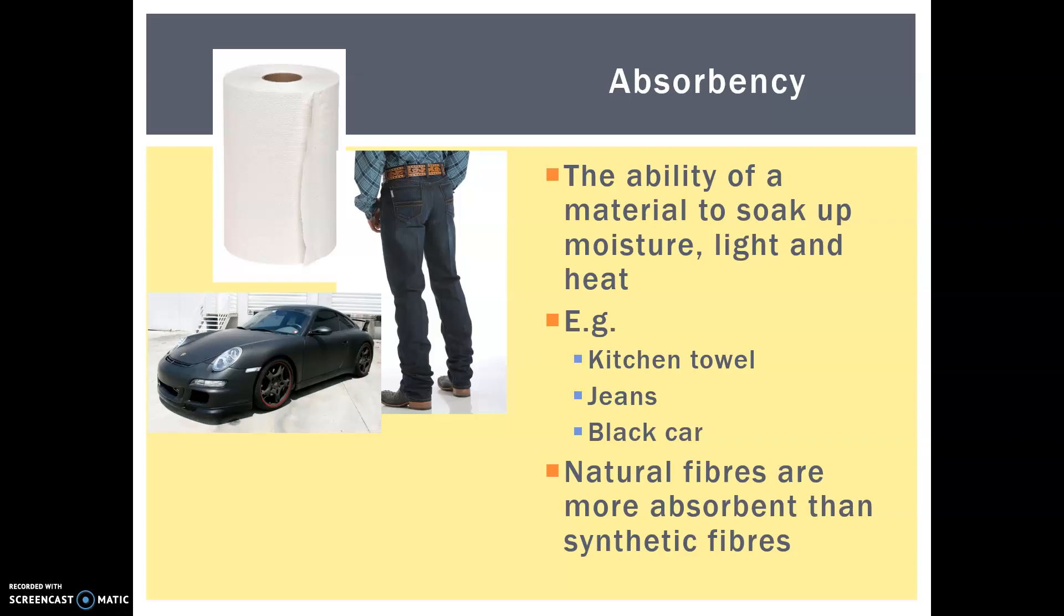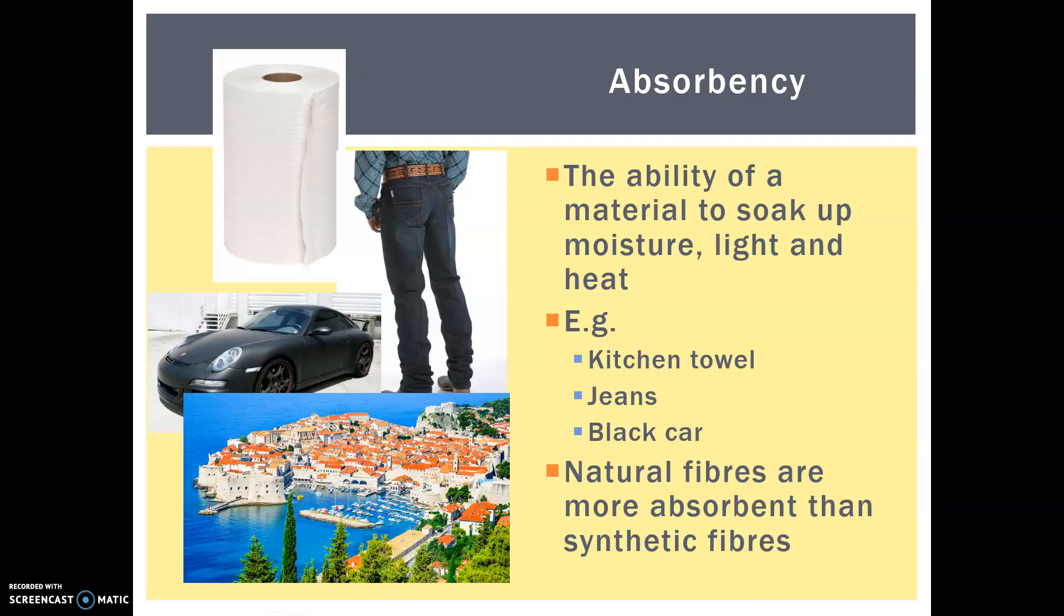Now natural fibers, just going back to the jeans, are more absorbent than synthetic fibers. So often people will wear wicking clothes or waterproof clothes when they're exercising or going outside. And this cotton or wool is very much more absorbent. And just going back to the absorption of light and heat, this is why you'll find so many Mediterranean houses are painted white or have terracotta roofs, because both of those things are very reflective of light and heat, so it keeps them nice and cool.